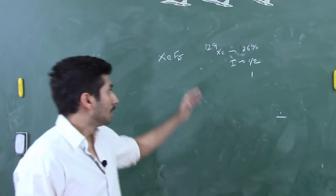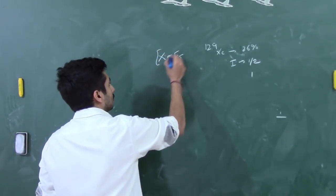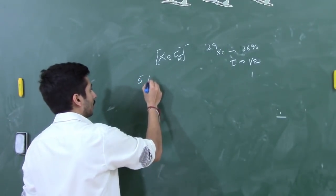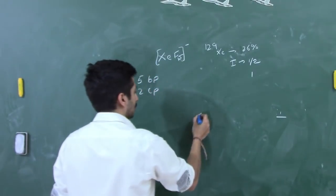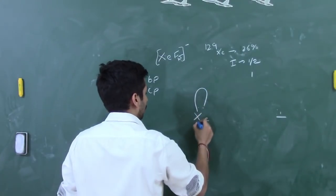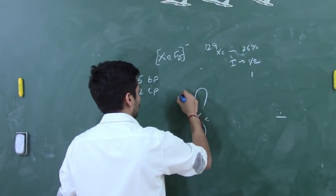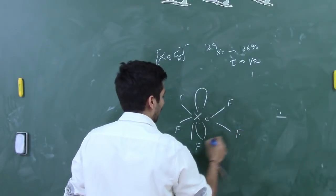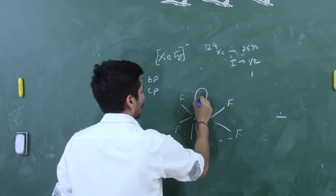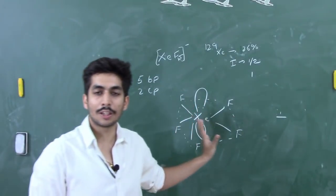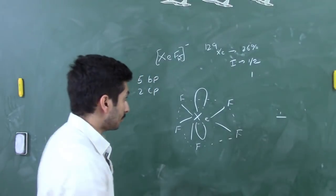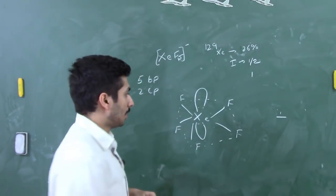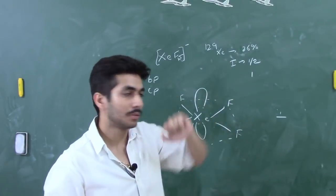First, consider the structure of XeF5⁻. According to VSEPR theory, it has five bonding pairs and two lone pairs. The two lone pairs are above and below the plane, and the five fluorines are in the plane, equidistant from one another. So all five fluorines are equivalent. You can pause the video and try to find the answer and the ratio of peaks.